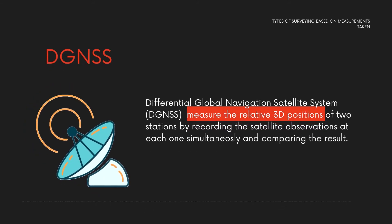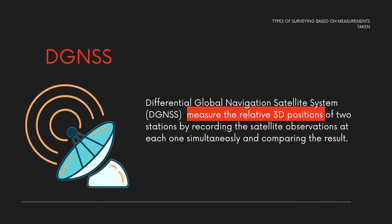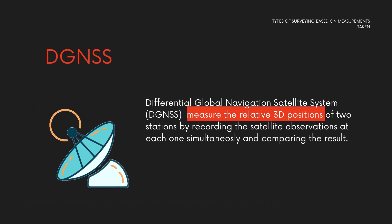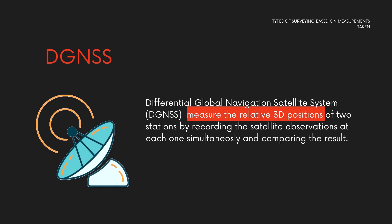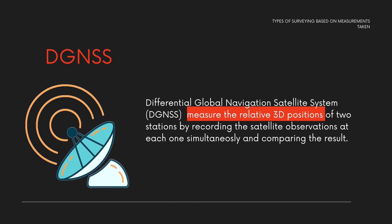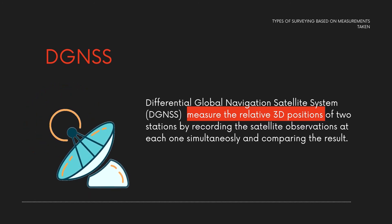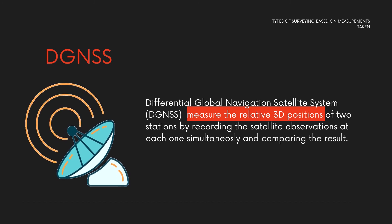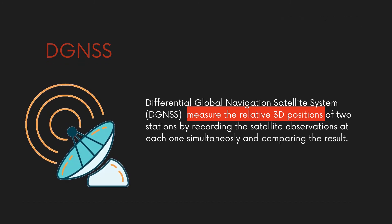DGNSS — Differential Global Navigation Satellite System. Used to measure the relative 3D positions of two stations by recording the satellite observations at each one simultaneously and comparing the results.